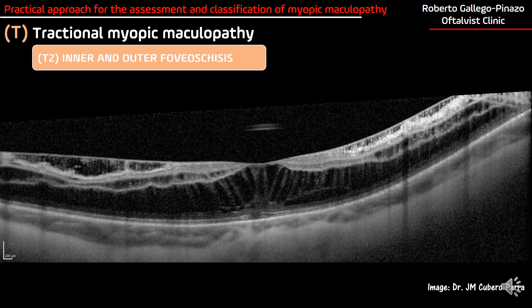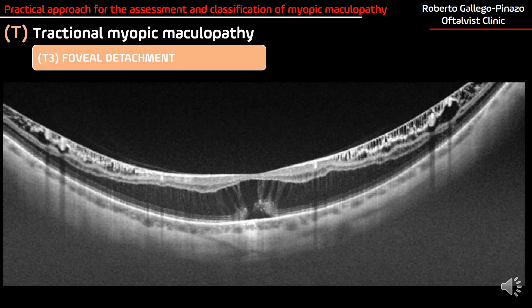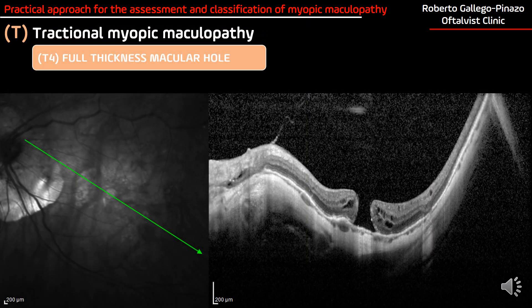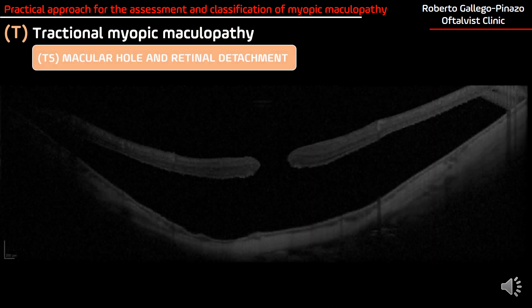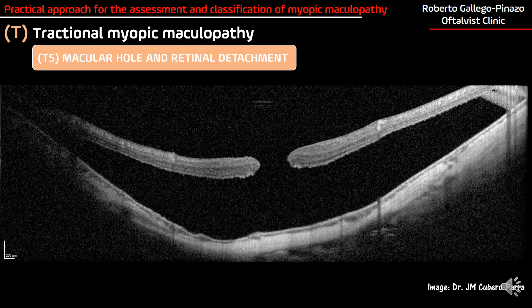This beautiful image provided by Dr. Juan Manuel Cubero from Córdoba, Spain, beautifully illustrates the outer foveal schisis and the inner foveal schisis in one case. Eventually, these cases may develop foveal detachment, and also full-thickness macular holes — with a particular situation in myopic patients where the macular hole may behave as a rhegmatogenous lesion leading to retinal detachment, which is T5 stage of tractional myopic maculopathy.